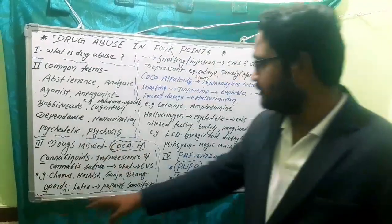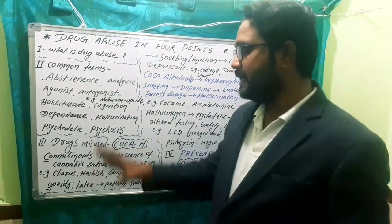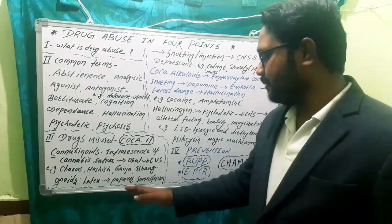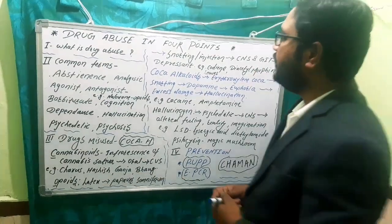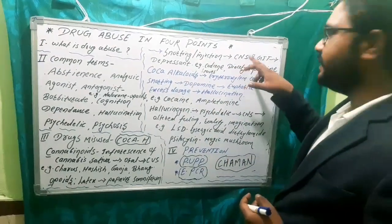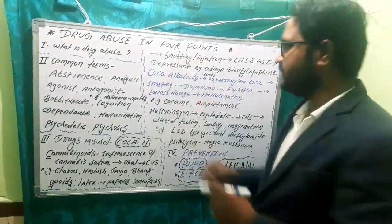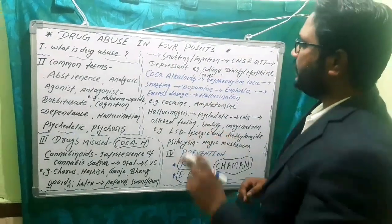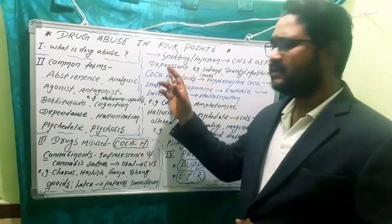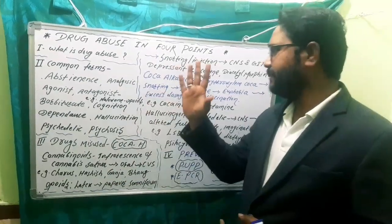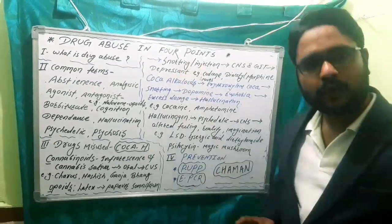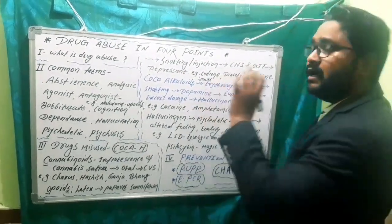O for Opioids — whereas cannabinoids are taken from the inflorescence, opioids are taken from the latex part of the plant Papaver somniferum. They are taken by snorting or injection and affect two systems: the central nervous system and the gastrointestinal system. They basically slow down the body, like sleeping pills, which is why they are depressants.